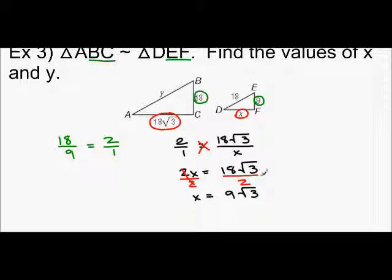Okay. And now, we need to find Y. So, I know that Y goes with 18. Can't go with anything else. Everything else, I've already circled. So, now I'm going to say 2 over 1 equals Y over 18.